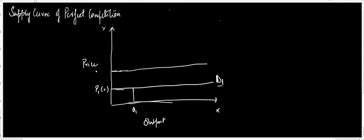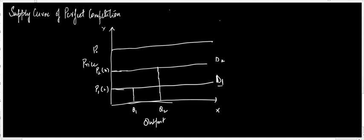At price P2, say for example 3, the demand is D2 and the firm supplies Q2. At price P3, say for example 4, the demand is D3 and the firm supplies Q3. The question arises: why does a firm supply Q1, Q2, and Q3 at these respective prices?